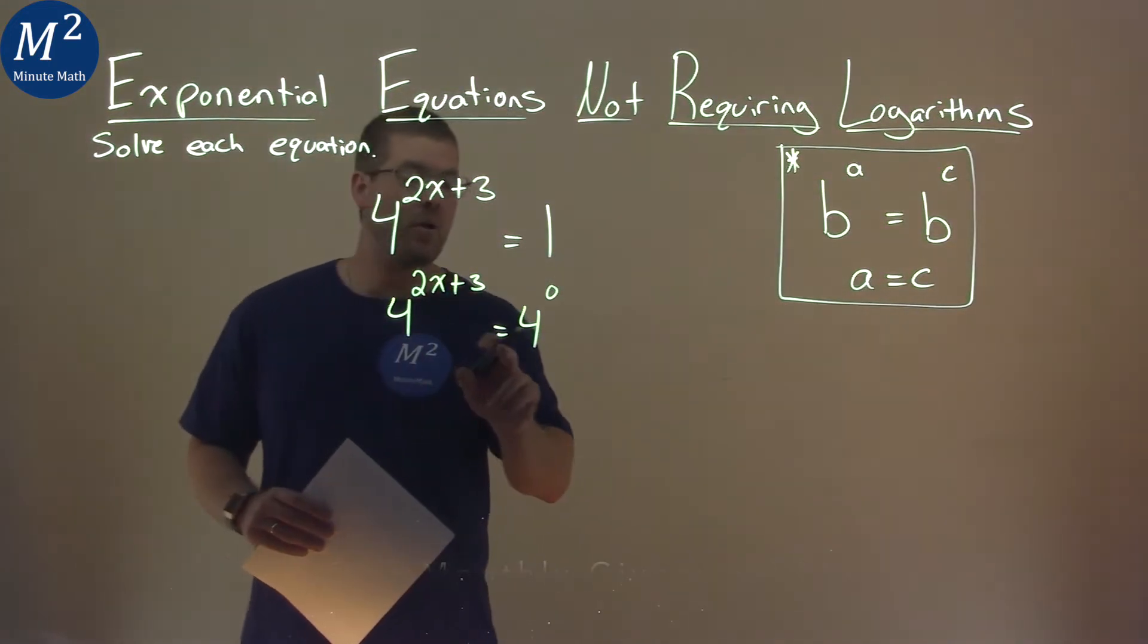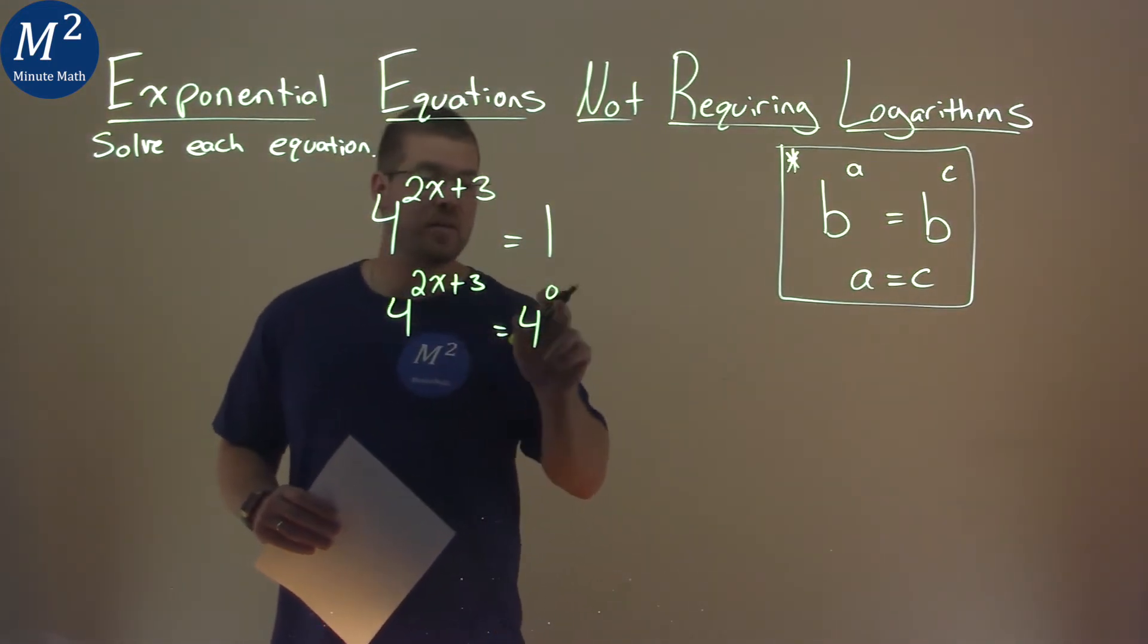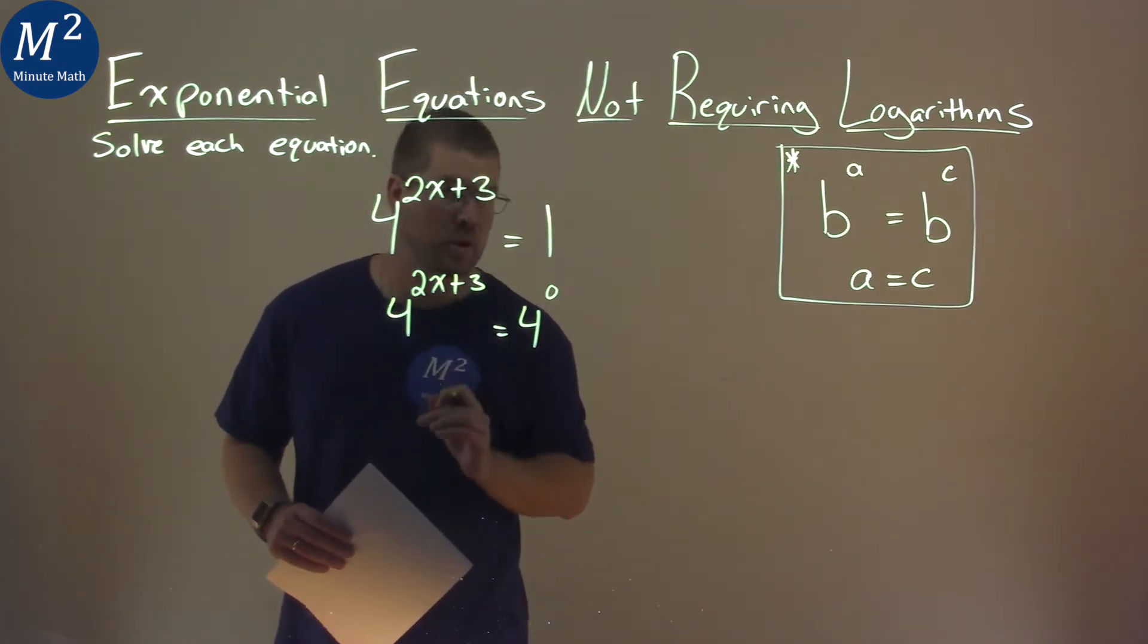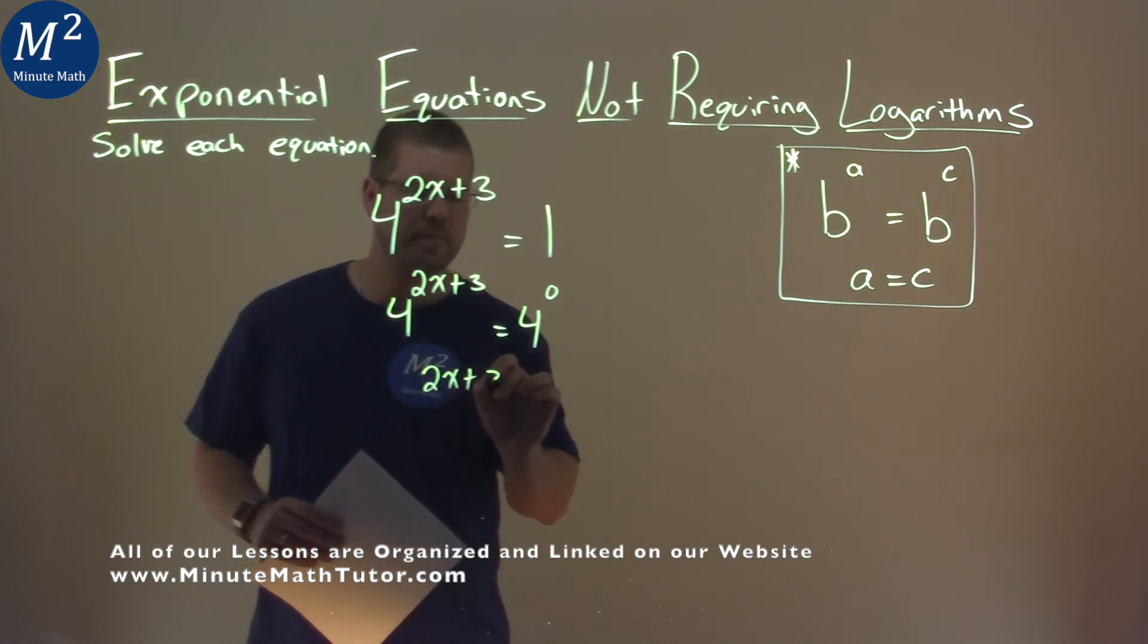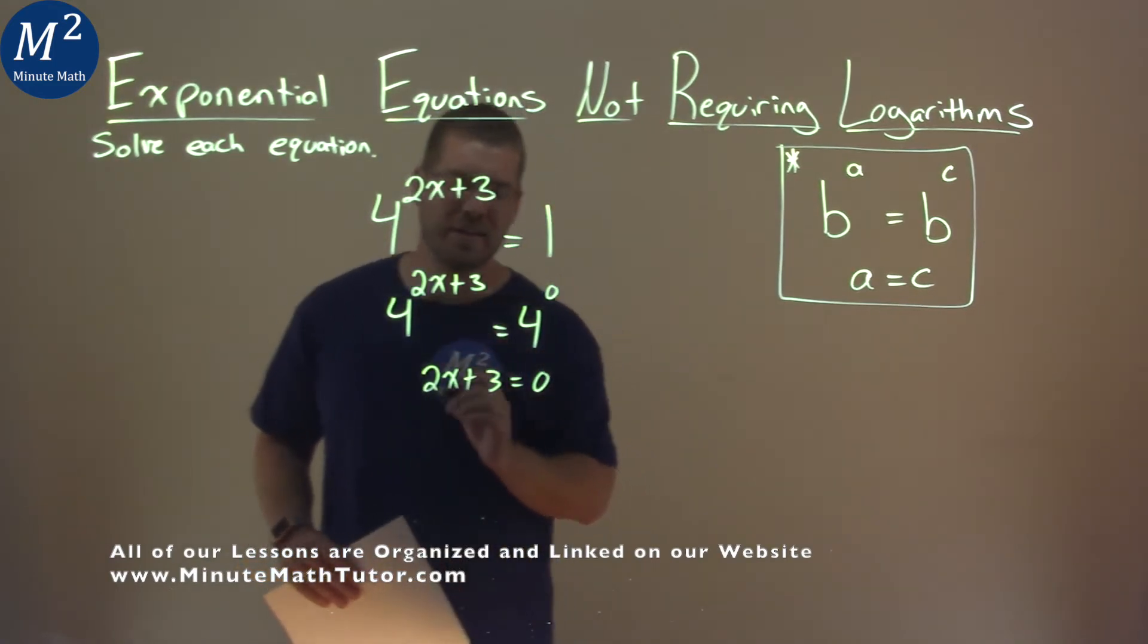With that being said, we now can set just the exponents equal to each other and solve for x here, since the base is the same. So now we have 2x plus 3 equals 0, and this is a pretty easy problem to solve.